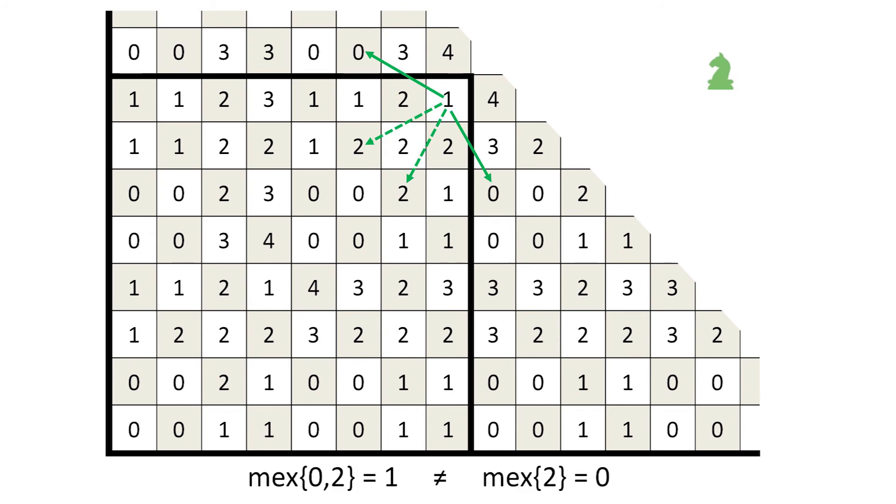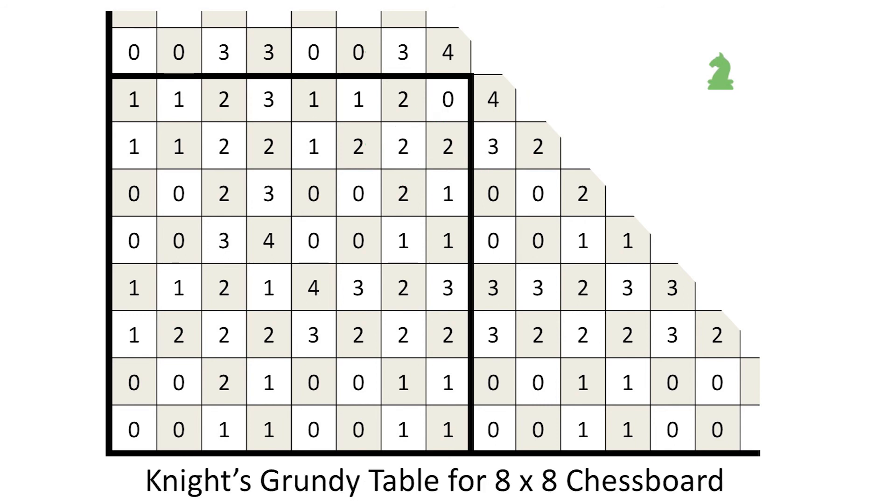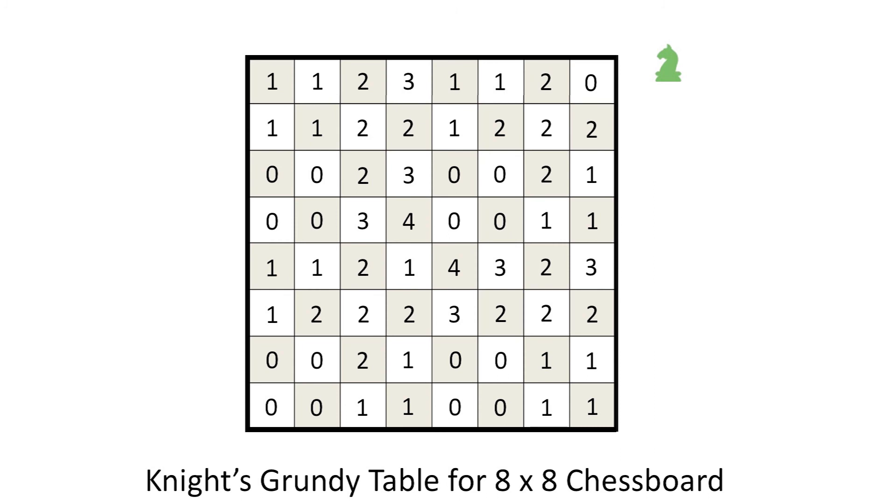But the corner square of the 8x8 board is different. On the very large board, its number is 1. But both of its moves to 0 require leaving the smaller board. So when the knight is restricted from the larger board to the 8x8 board, its Grundy number of the northeast corner square changes from 1 to 0. You might want to examine Grundy tables for boards of sizes other than 8x8. Some of them have more changes than this one.